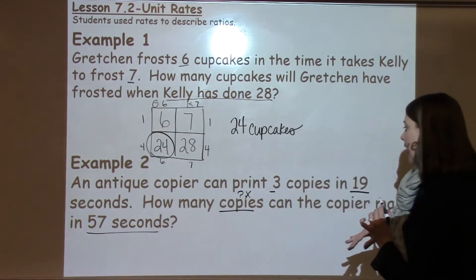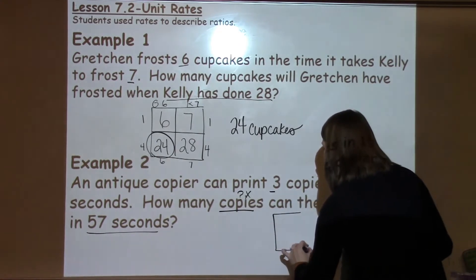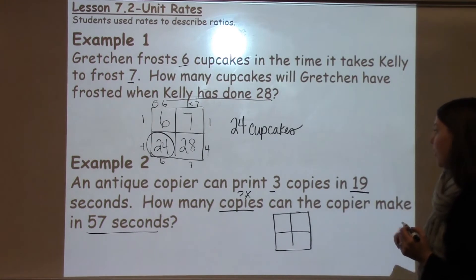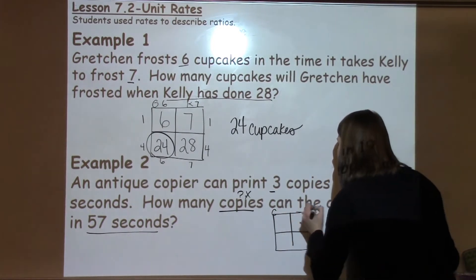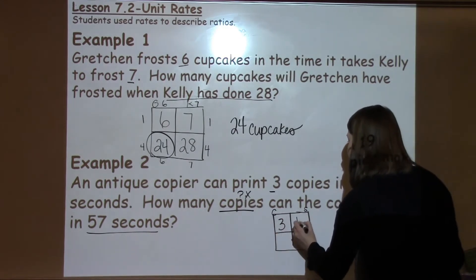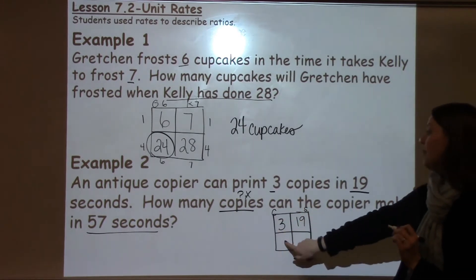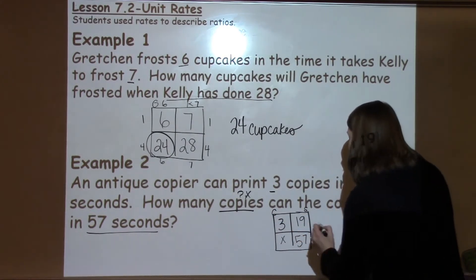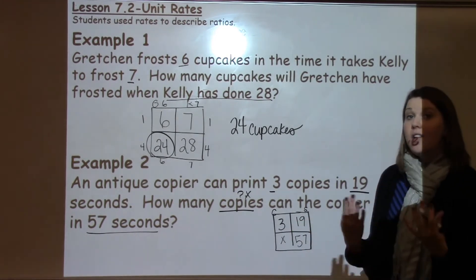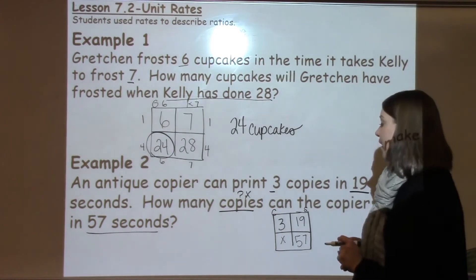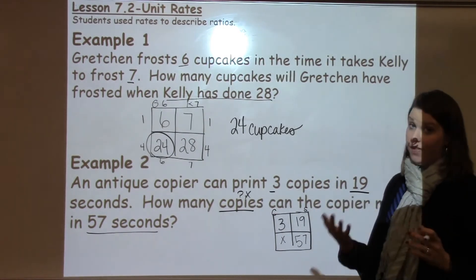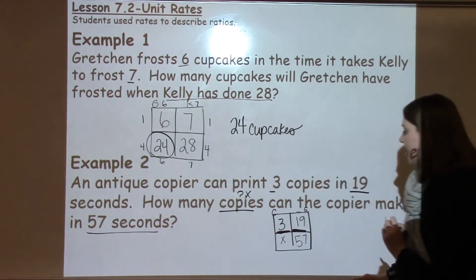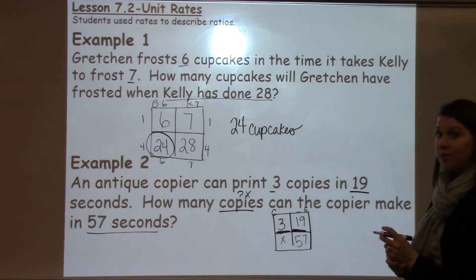I'm going to set this problem up in a factor puzzle as well. I'm going to label my copies and seconds. So I can write 3 copies in 19 seconds, and then I'm trying to figure out how many copies — I don't know this one, this is my x — in 57 seconds. As you can tell, I've got some pretty big numbers: 19 and 57. So I'm going to show a way to solve this by turning these into fractions, giving me 3 over x and 19 over 57, and I'll need to cross-multiply to isolate for my x.